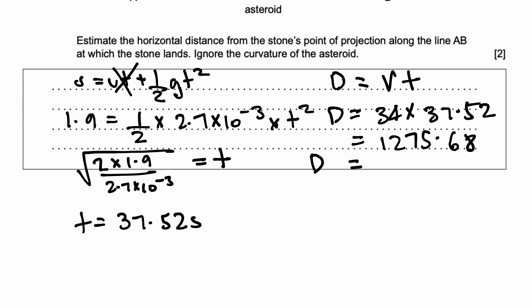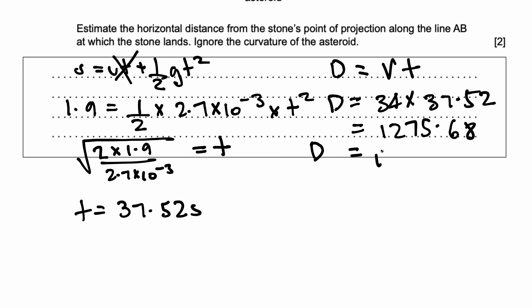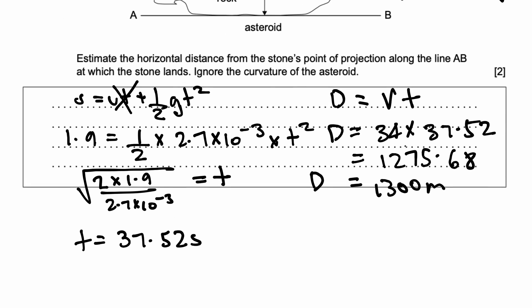And then giving it to the appropriate amount of significant figures, I can say that the answer for the distance of projection is actually equal to 1300 meters. And that's just due to a bit of rounding, but 1300 meters, because I need to convert it into the correct amount of significant figures.